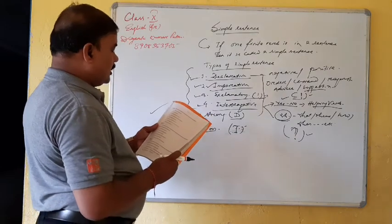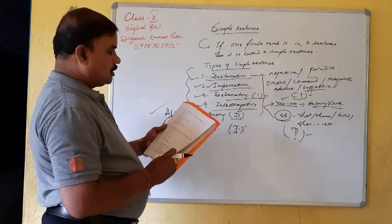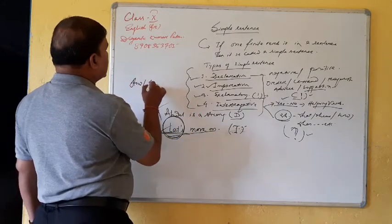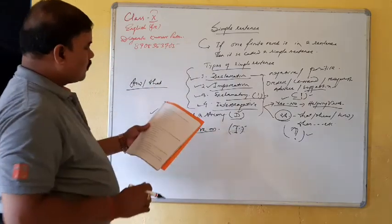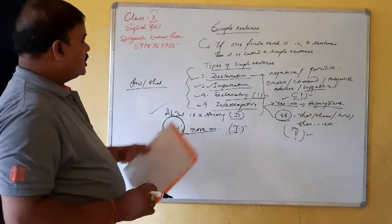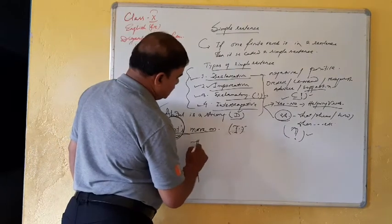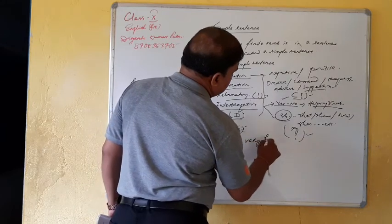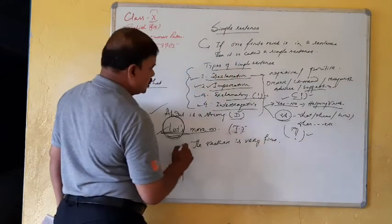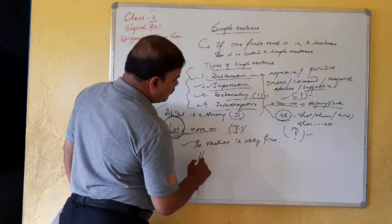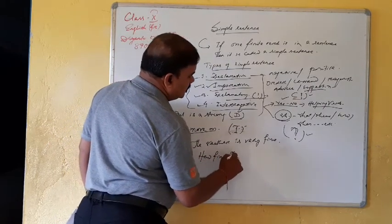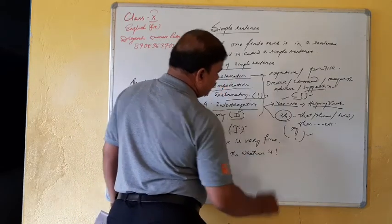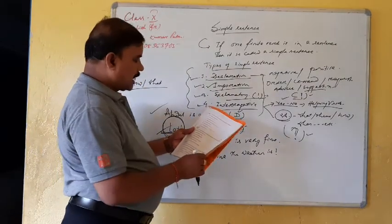Then activity three you can find, turn the following declarative sentence into exclamatory sentence using how and what. The weather is verified, see the sentence is, the weather is verified. So how can we turn into an example? How fine the weather is, then we give a punctuation mark. Likewise you can do the activity three.